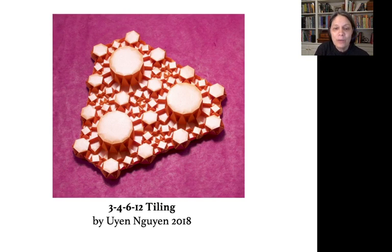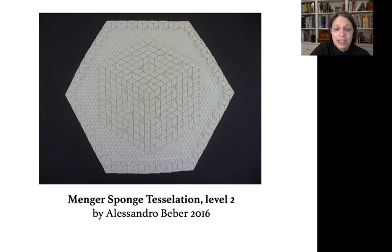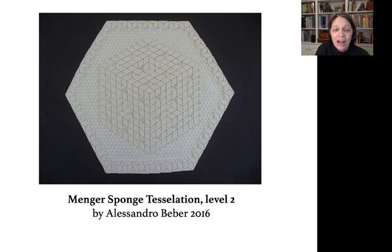This origami work by Wen Wen is folded from a single sheet of paper. It depicts a tiling by triangles, squares, hexagons, and dodecagons. And this piece by Alessandro Weber is also folded from one piece of paper, and achieves a remarkably three-dimensional looking image of a mathematical object called the Menger sponge.